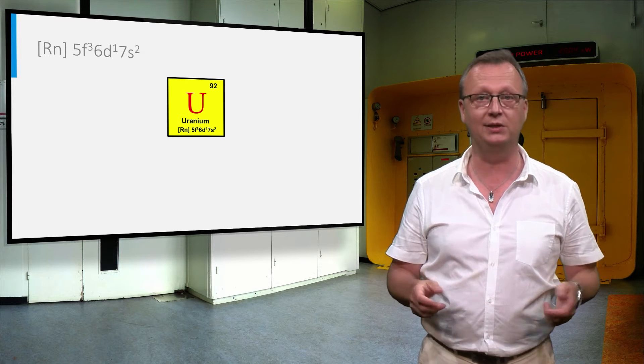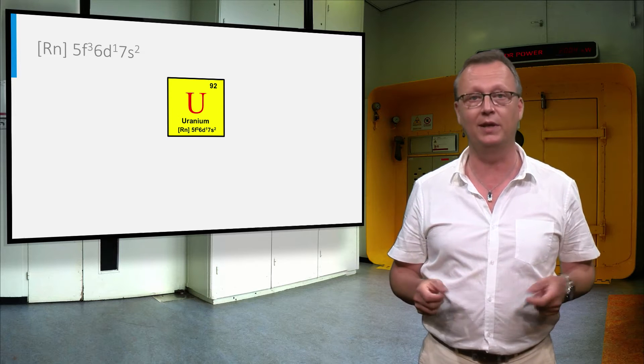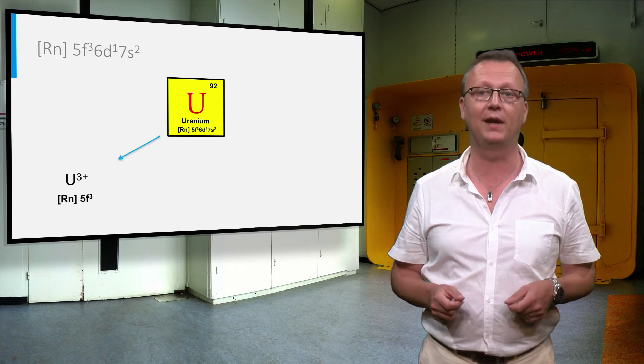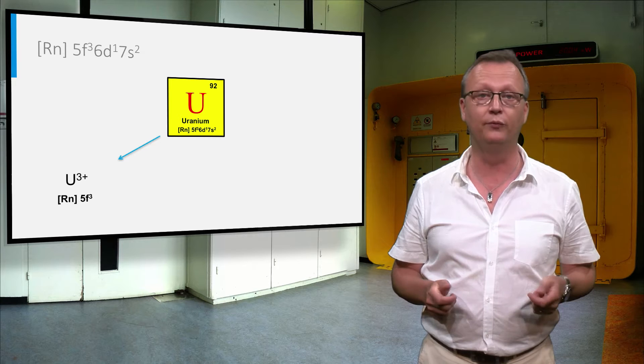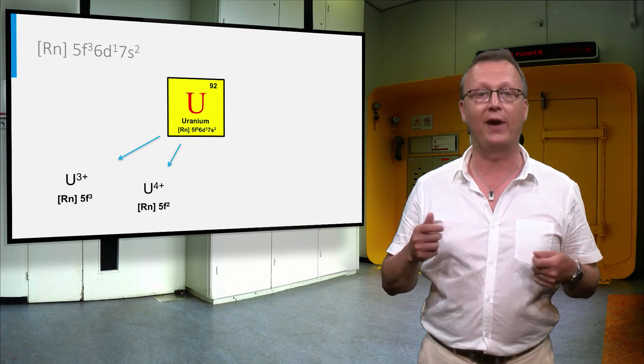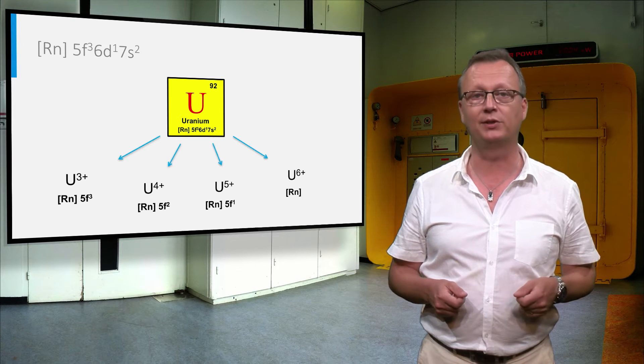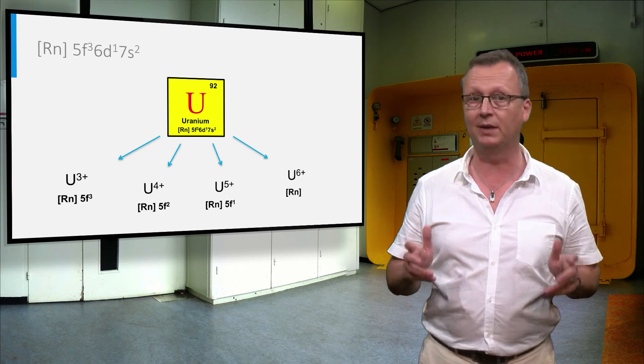As a result, uranium can exhibit a variety of valence states. If the 7S and the one 6D electrons are removed, uranium has a 3+ valence state, and if then the 5F electrons are subsequently removed, a 4+, 5+, and 6+ state is obtained. The 6+ state has the radon noble gas electron configuration, which is extremely stable.